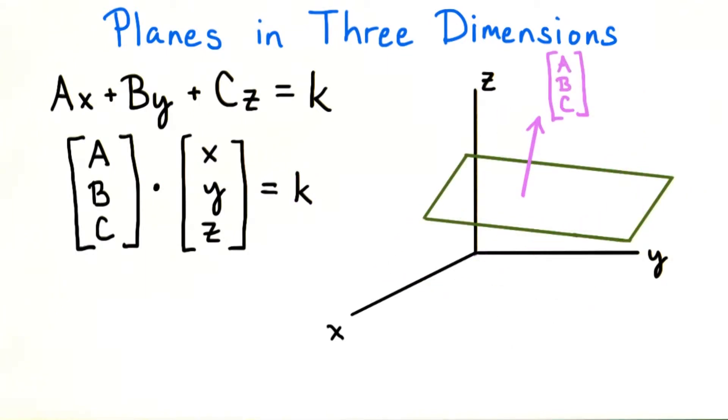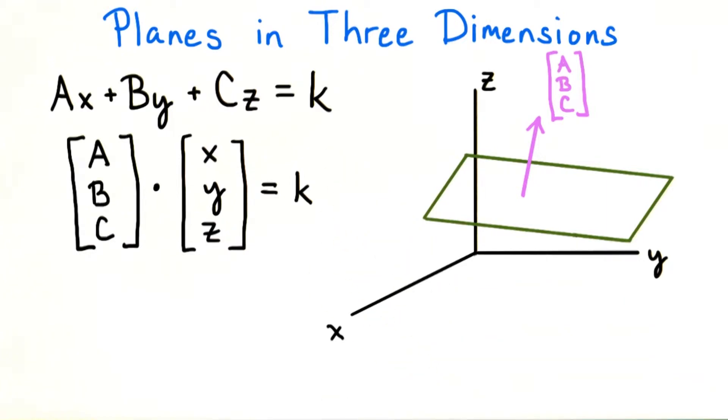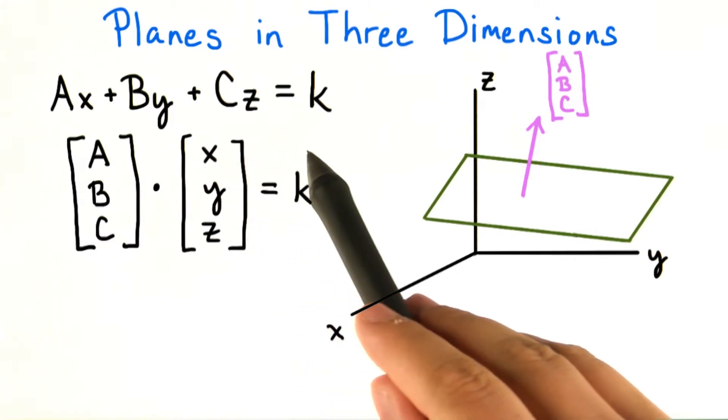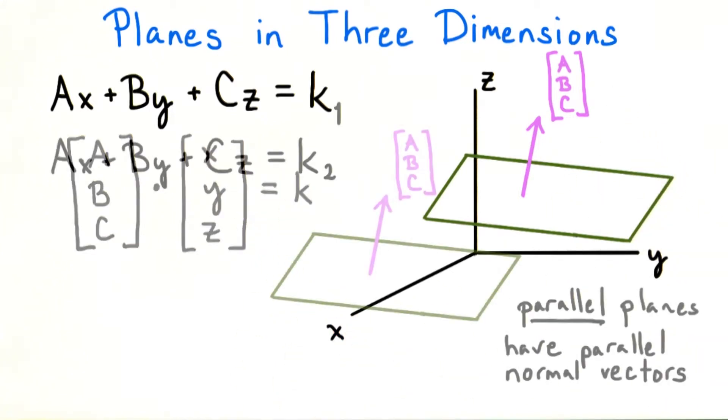And also like with lines, changing the value of the constant term k shifts the plane, but it doesn't change the direction of the plane at all. So regardless of the constant term, the plane defined by ax plus by plus cz equals k has abc as a normal vector.